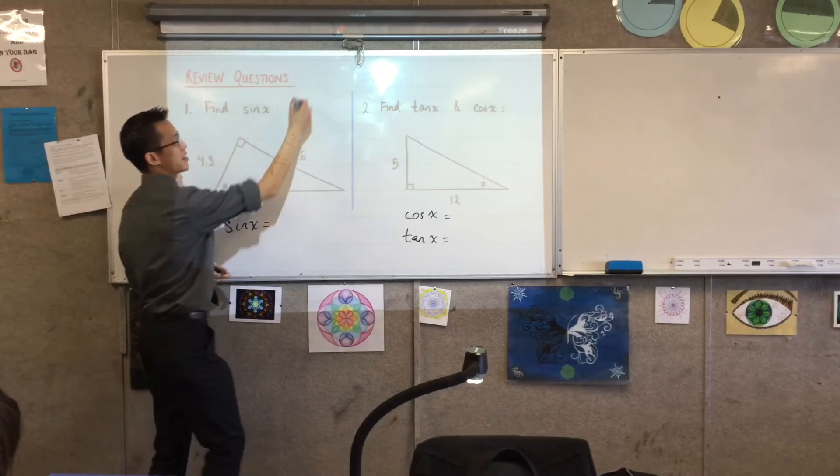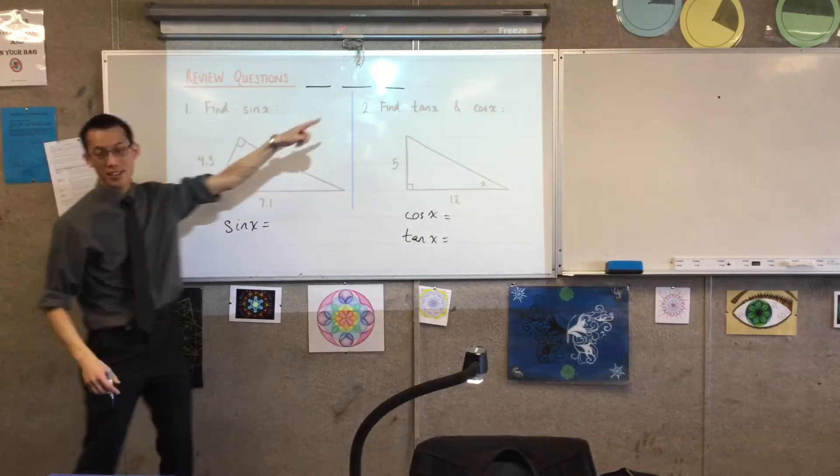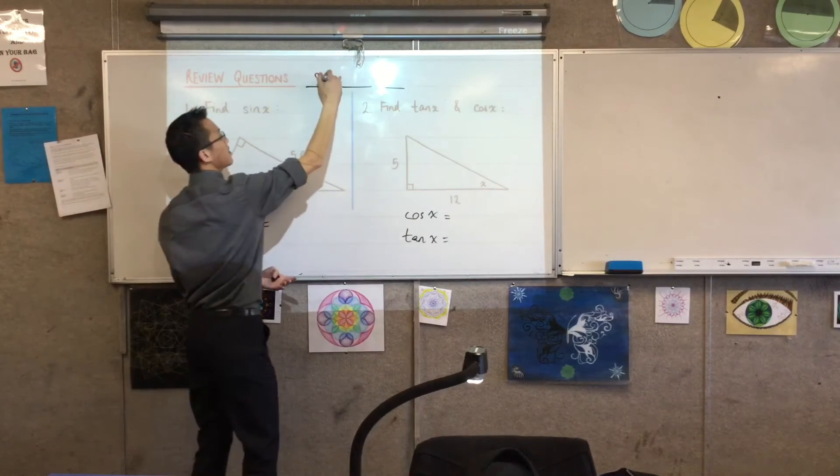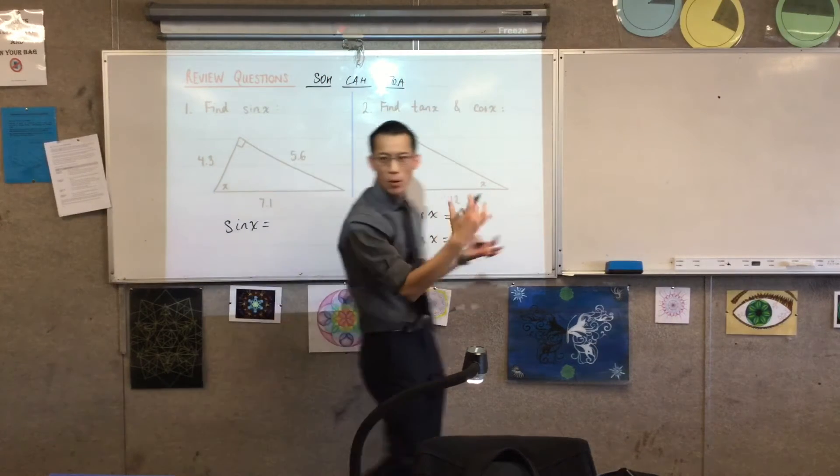Now, you may like to recall that there's a mnemonic device to remember for sin, cos, and tan. We say Saka Toa, to help us remember. What is that telling us?